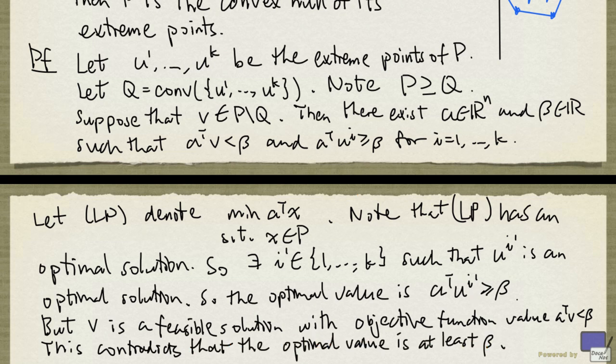Because of this contradiction, our original supposition that there exists an element V in P but not in Q must be false. So P is in fact equal to Q, and we have proved our result.